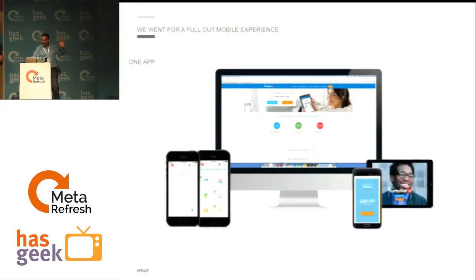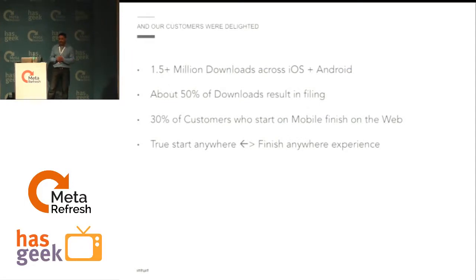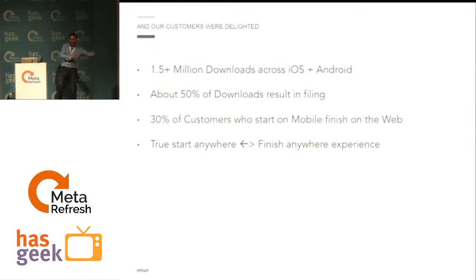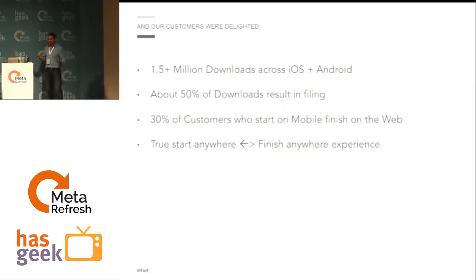We stepped back and built a full-fledged across-device mobile experience, launched in December of last year. We've been learning constantly along the way — 1.5 million plus downloads, and 50% of people who download actually file. We're doing something right. We learned that with complex taxes, people start on mobile to do paperwork entry by taking pictures, but ultimately transition to the web to finish. We launched a true start-anywhere, finish-anywhere experience for our customers.